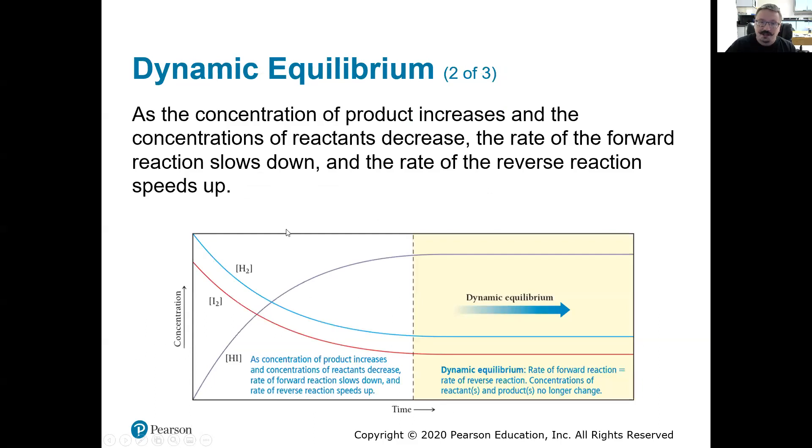So what does that look like? Here's an example. We have our two lines: the concentration of H2 and I2 over time, and the concentration of the product HI over time. Initially when there's no products, we would have a high concentration of the reactants and none of the products.